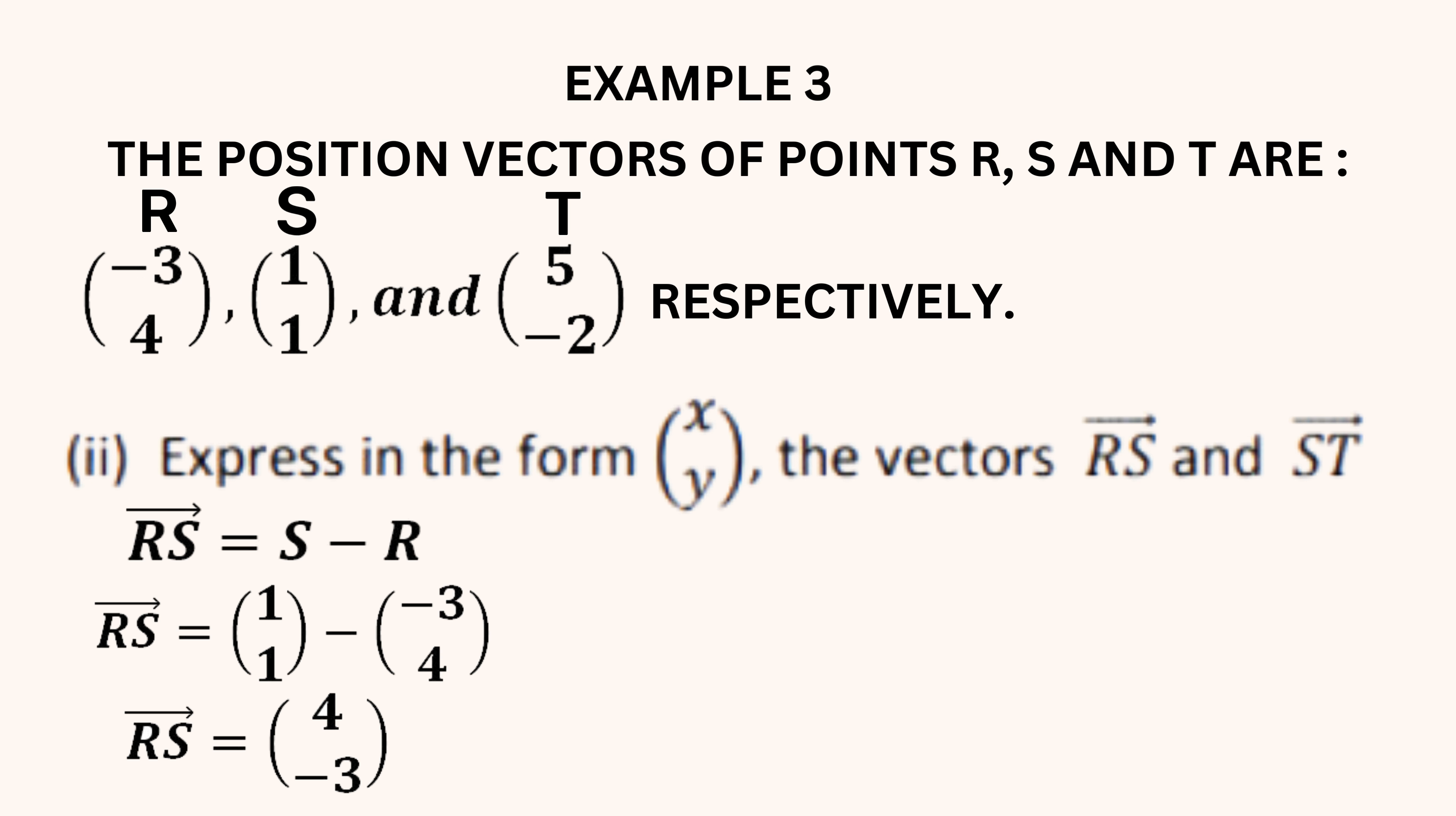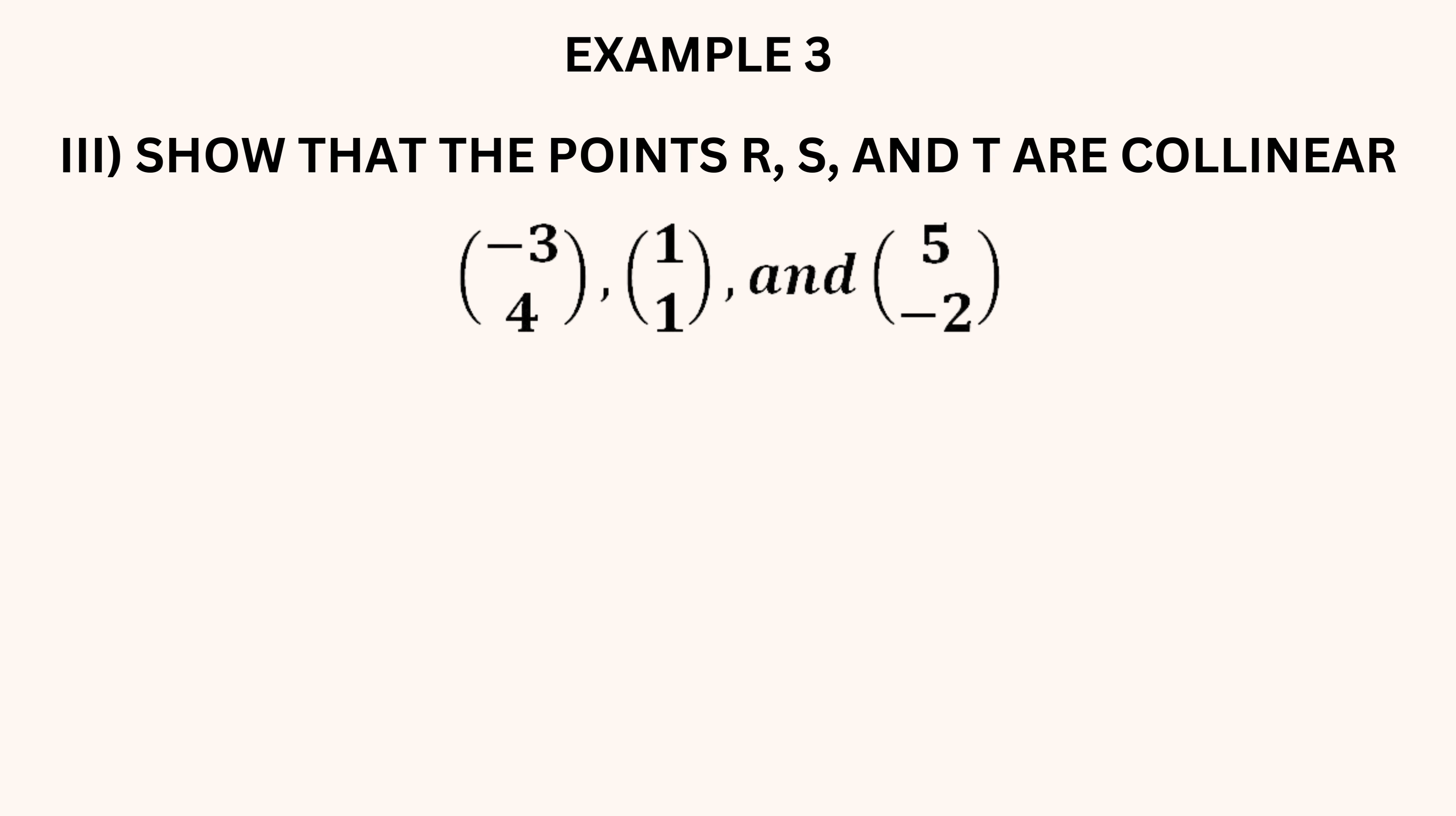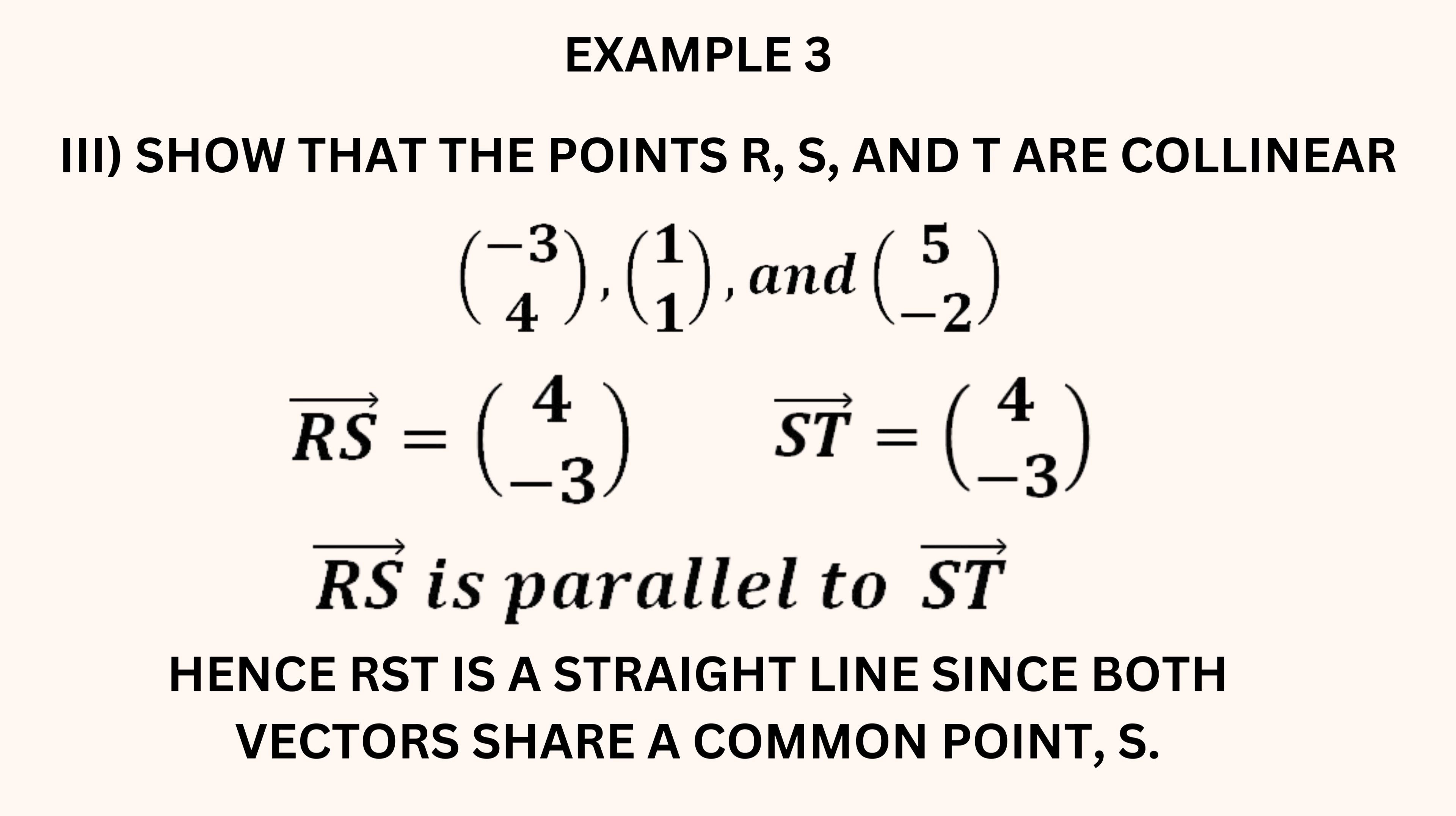To get the vector ST, we do the same. Reverse the points and subtract. 5 minus 1 is 4, while minus 2 minus 1 is negative 3. To prove that 3 points lie on the same straight line, we need to demonstrate that the vectors formed between each pair of points are parallel. Vectors RS and ST are obviously parallel vectors, since they are the same. Both vectors share the common point S, hence for RS to be parallel to ST, all 3 points will have to lie on the same straight line.